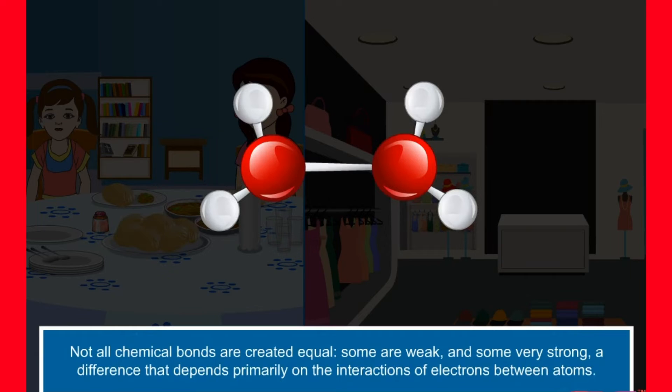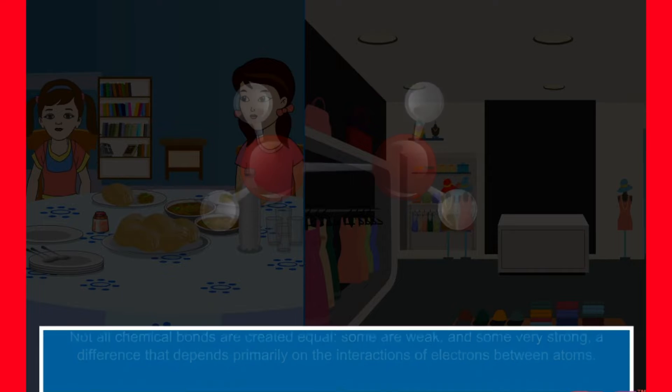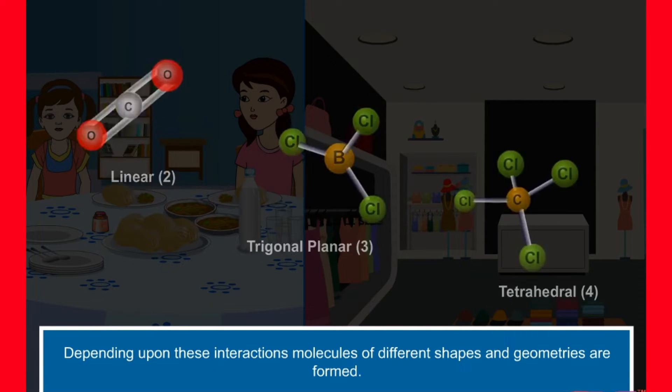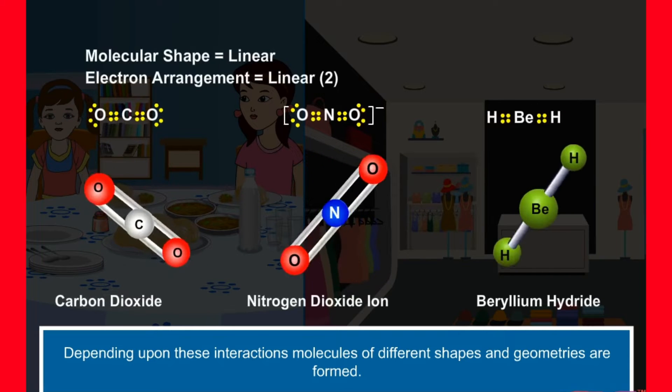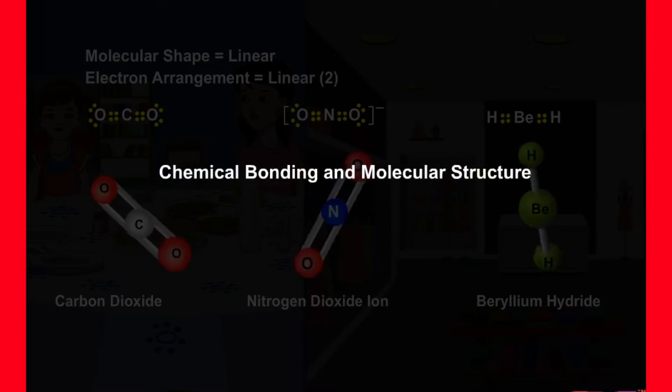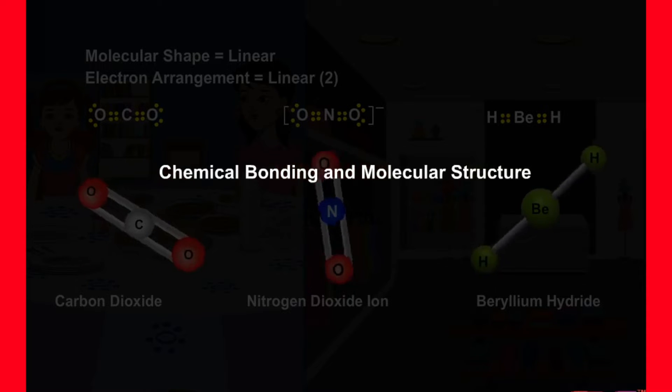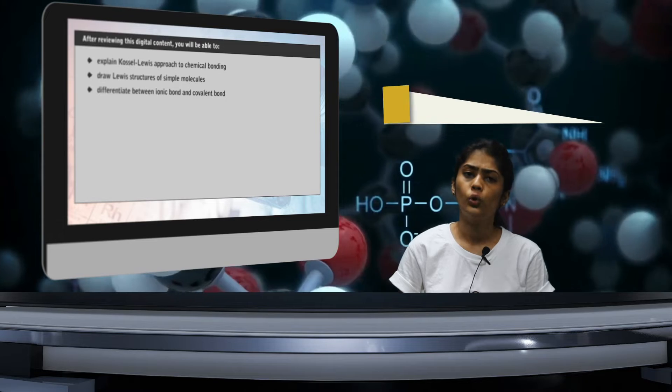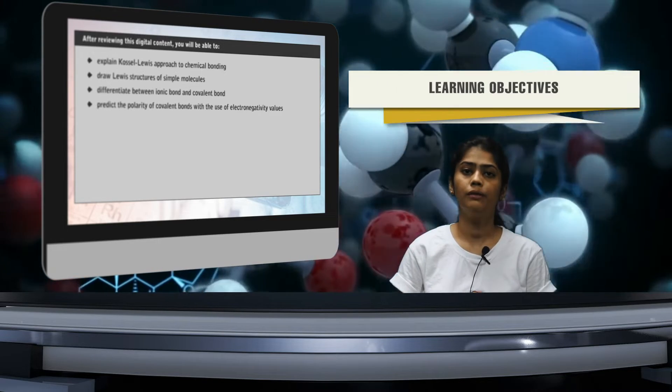Not all chemical bonds are created equal. Some are weak and some are very strong, a difference that depends primarily on the interactions of electrons between atoms. Depending upon these interactions, molecules of different shapes and geometries are formed. Let us discuss this concept in detail in this module, chemical bonding and molecular structure. So let's look at our learning objectives in brief.